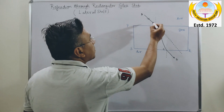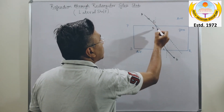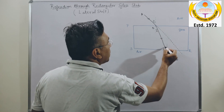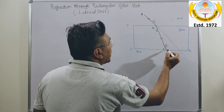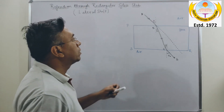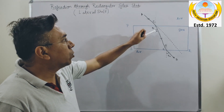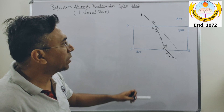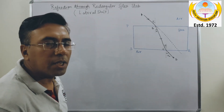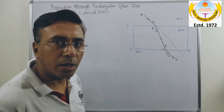Let's label the angles: I1 is the angle of incidence for surface PQ, R1 is the angle of refraction for surface PQ, and I2 and R2 are the angle of incidence and angle of refraction for surface SR.